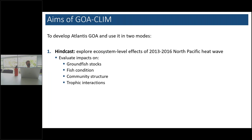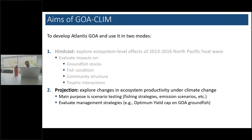The aims of this project were to develop and apply the model in two modes. One would be the hindcast — exploring ecosystem-level effects of the 2013 to 2016 heat wave and its impacts on groundfish stocks, fish condition, and other properties of the Gulf of Alaska system. The roadmap was then to go from that to a projection study — using Atlantis along with other models including Ecopath with Ecosim frameworks and a CEATTLE model, plus single-species projection models, to explore things like the optimal yield cap on Gulf of Alaska groundfish in the scope of climate change.